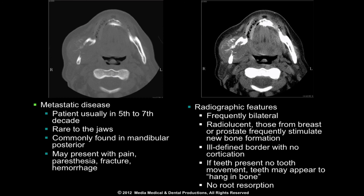Radiographically, metastatic disease presents as radiolucent with ill-defined to moderately well-defined borders with no evidence for cortication. Lesions secondary to the breast and prostate frequently stimulate bone formation within the central radiolucency. The lesion may proceed to destroy both medullary and cortical bone. Tooth movement and root resorption are rare.